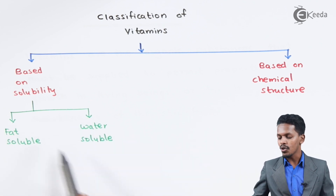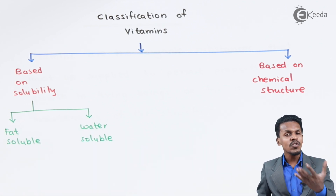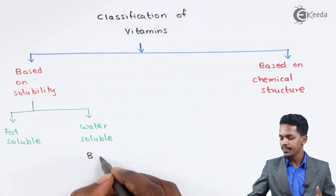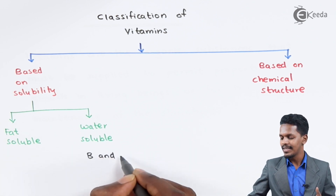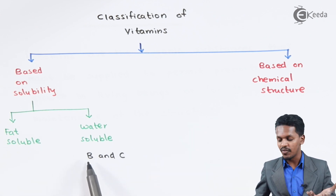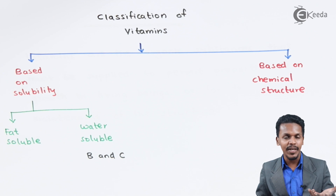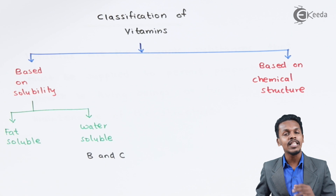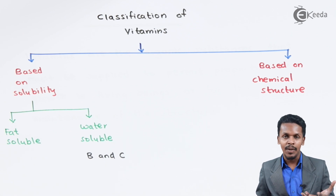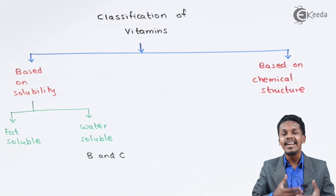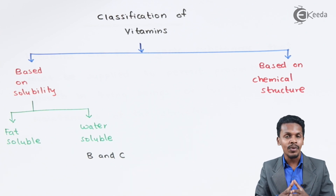Talking about the water-soluble vitamins first: water-soluble vitamins are vitamin B complex — that is B1, B2, and so on — and vitamin C. These are the water-soluble vitamins and they are not stored in our body, so that is the reason we have to take them regularly. They are non-toxic in nature.